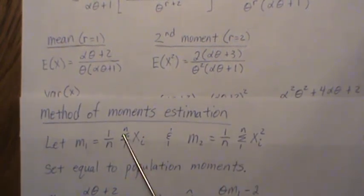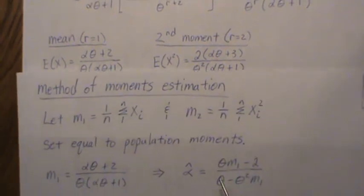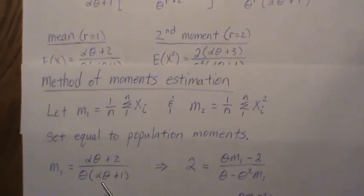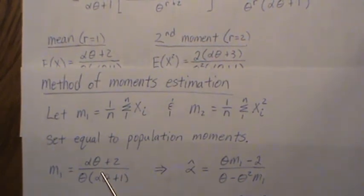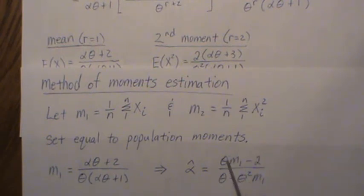And m2 is the sum of the xi squareds divided by n. So we take m1 equal to this, which is what this represents, and then what we do is we solve this for alpha, and we get alpha hat.